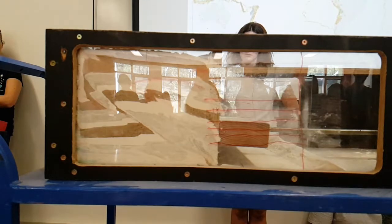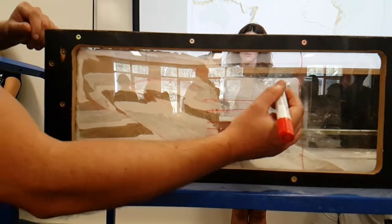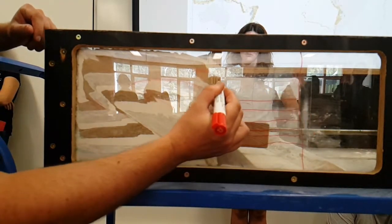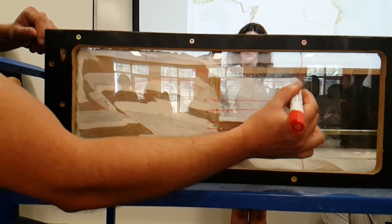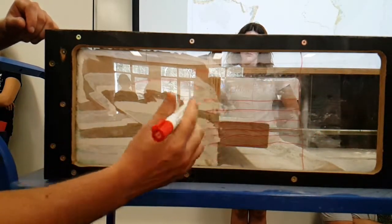You can see we've got significant crustal shortening. We've shortened this crust by nearly half of its original length as the material has been compressed.